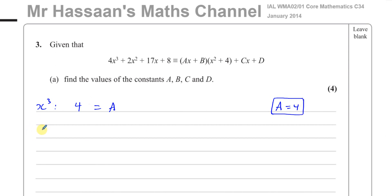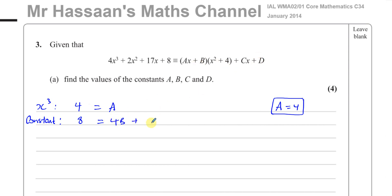Normally the easiest way to deal with this is to look at the two extremes — the highest power and the lowest power — as you can find those in the easiest way. So I'm going to look at the other extreme, which is the constant. Look at the highest power x-cubed, and now compare the constants on both sides. Here the constant is 8. The constant on the right-hand side will include B times 4 from this bracket, giving 4B, plus D. I can't do much with this yet as both are unknown, but it will build up.